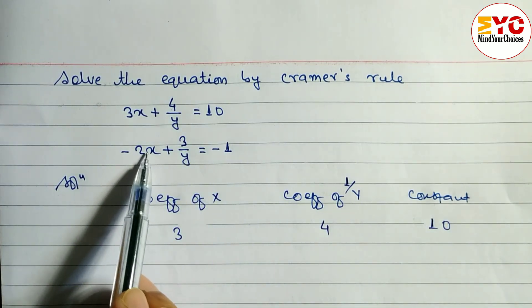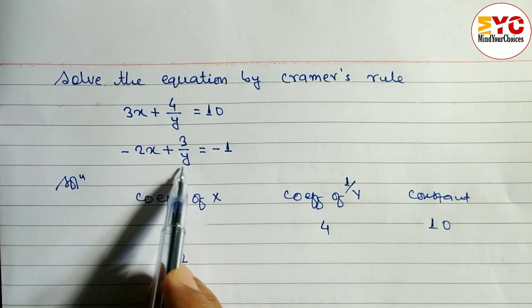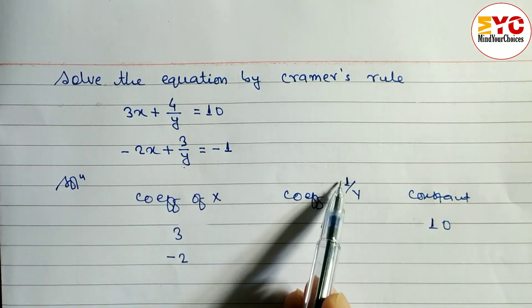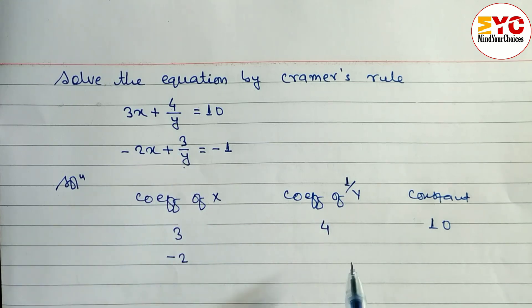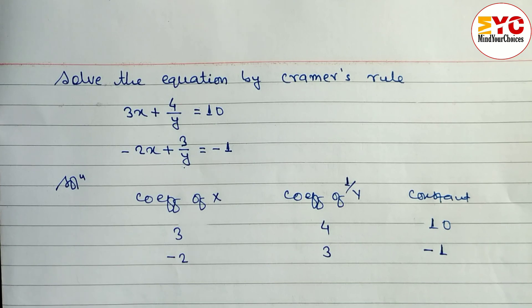For the second equation, the coefficient of x is minus 2, so we write minus 2. Here y is in the denominator, so we write 1 by y. The coefficient of 1 by y is 3, so we write 3. The constant number is minus 1, so we write minus 1 here.